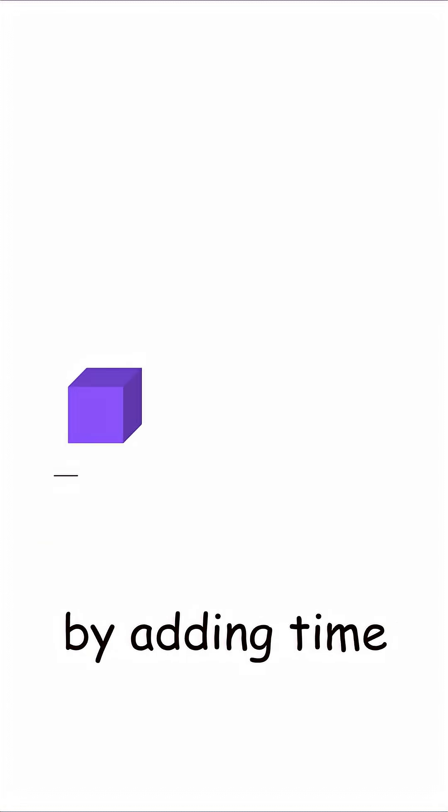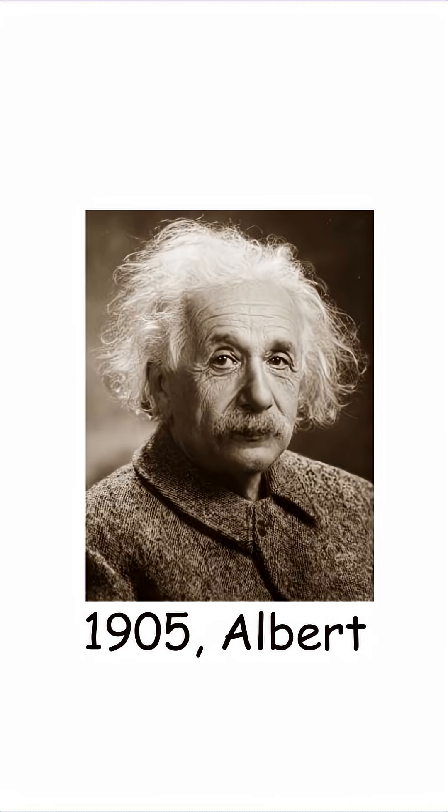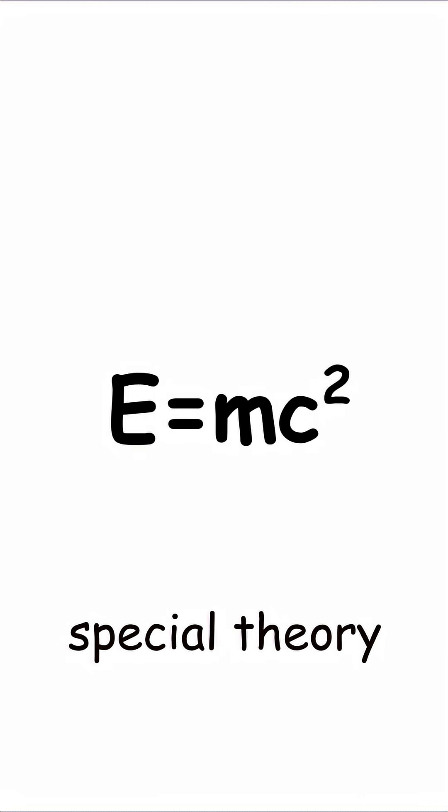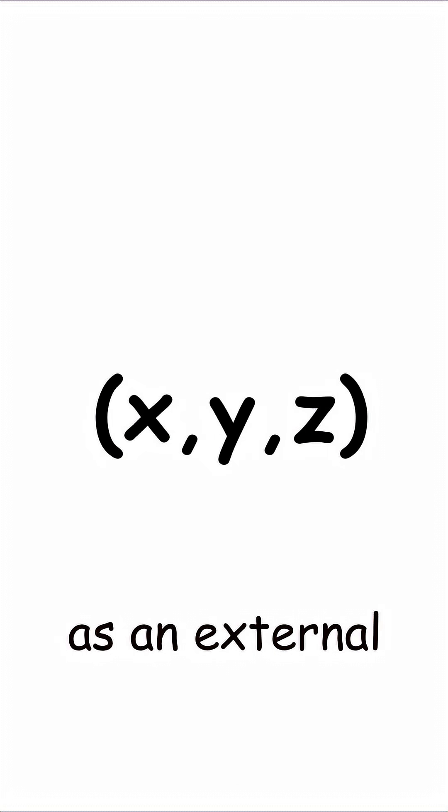The fourth dimension arises by adding time to the three spatial dimensions. In 1905, Albert Einstein formulated the special theory of relativity and proposed that time should not be treated as an external parameter.